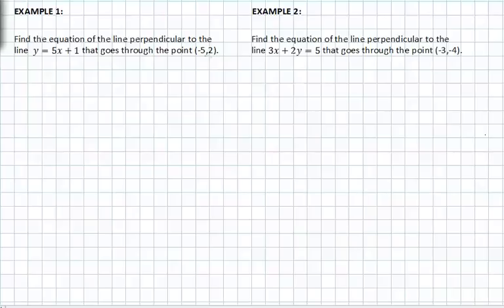The perpendicular line goes through negative 5, 2. So we know that our perpendicular equation of the line will be the opposite reciprocal of the slope.